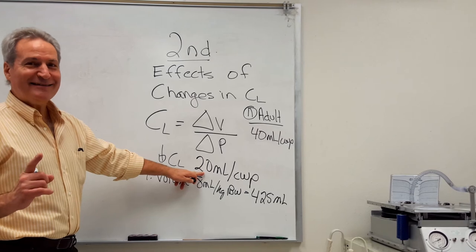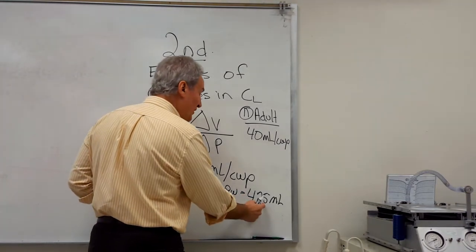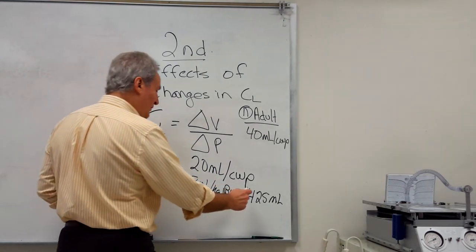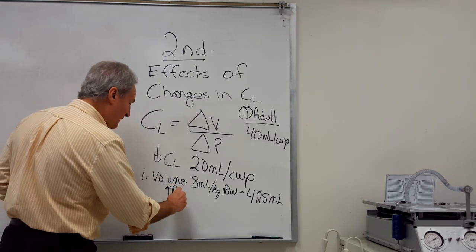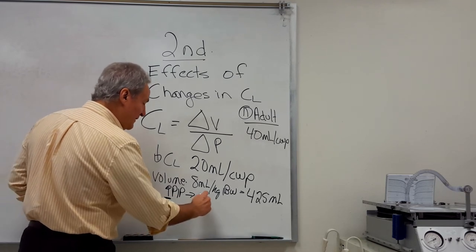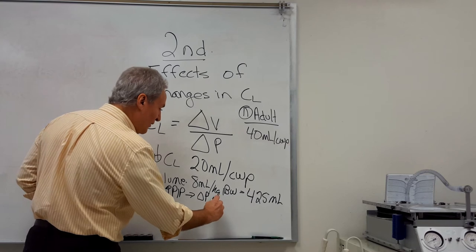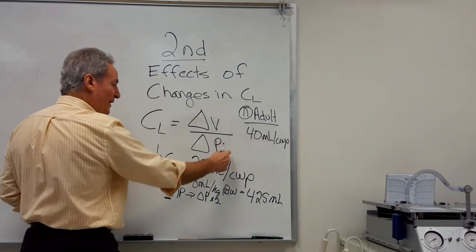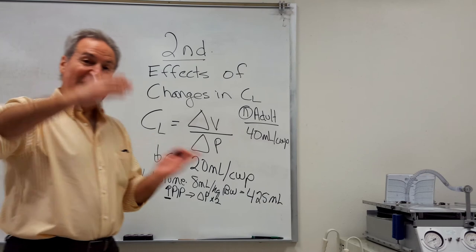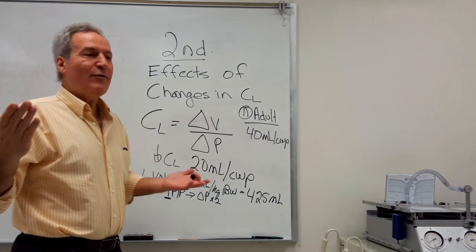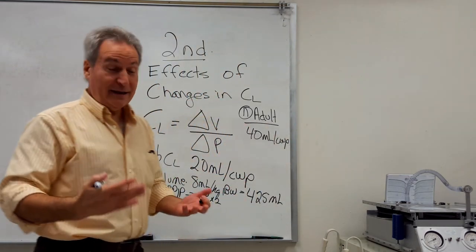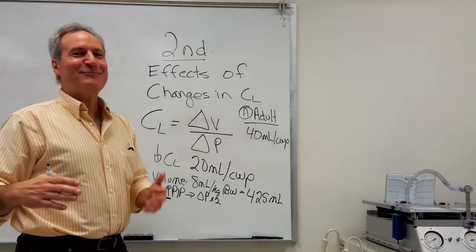The impact is we're going to have to see a major increase in pressure to maintain this volume. The result is the PIP is going to go up a lot. In fact, the delta P will have to go up by double because our compliance went down by half. To maintain that same volume, we're going to need to double our pressure. It's predictable—we know as soon as we make this change what should happen. Then we go and play with the ventilator and see that's what happened. If it doesn't, that means we messed up.